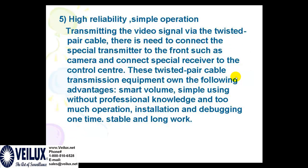High reliability and simple operations. Transmitting the video signal via twisted pair cables, you need to connect a special transmitter to the front end such as a camera and connect a special receiver to the control center. These twisted pair cable transmission equipment have the following advantages: small volume, simple to use without requiring professional knowledge, and easy installation and debugging in one operation. Stable for long-term use.